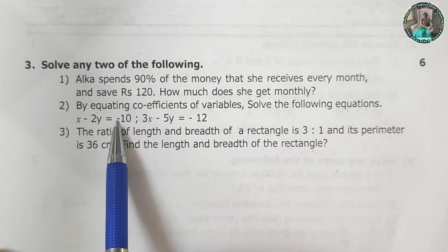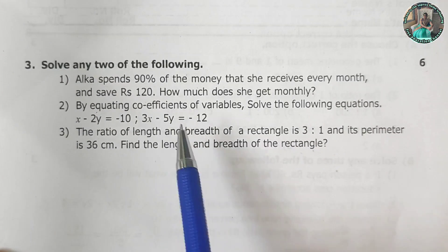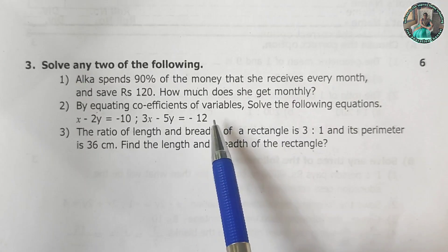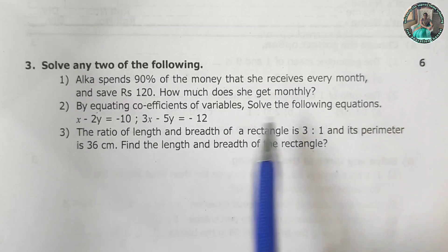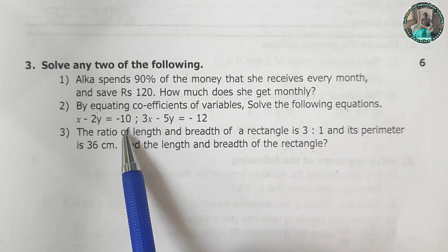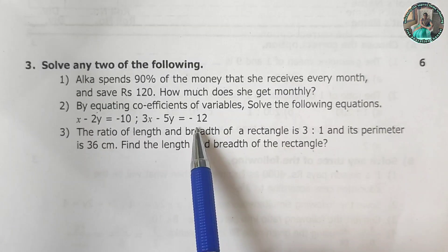2. By equating coefficients of variables, solve the following equations. x minus 2y is equal to minus 10. 3x minus 5y is equal to minus 12.